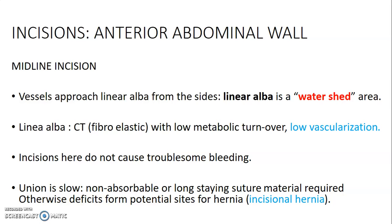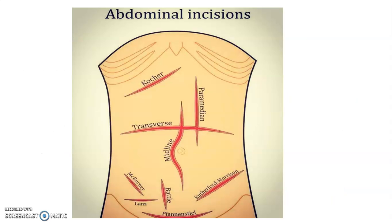We have a midline incision, and this is usually preferred because vessels approach the linea alba from the side. The linea alba is a watershed area — it's made up of connective tissue, therefore has low metabolic turnover and is less vascularized. So when you make an incision at the linea alba there's less bleeding, although the union or healing is usually very slow, so you require an unabsorbable or long-staying suture.